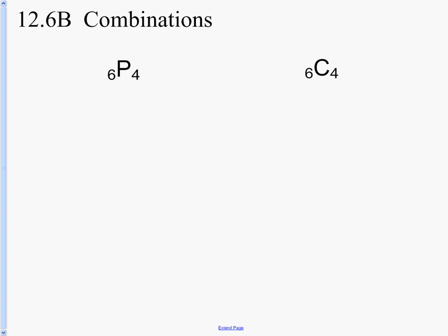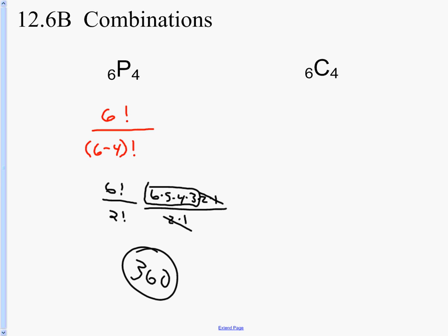Try this one. This is a review of doing P's and C's by hand. So it's 6 factorial over 6 minus 4 factorial. That would be 6 factorial over 2 factorial. 6, 5, 4, 3, 2, 1 all over 2 times 1. Cancels, cancels. And that seems like a lot to multiply, but you can do it. What's 6 times 5? 30 times 4? 120. 120 times 3? 360. Raise your hand if you had 360. Excellent.